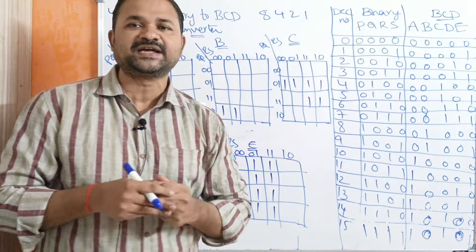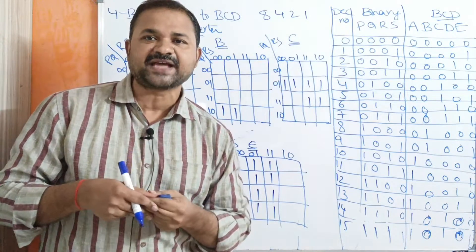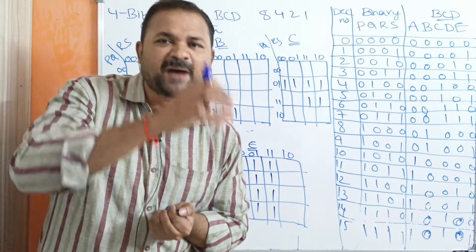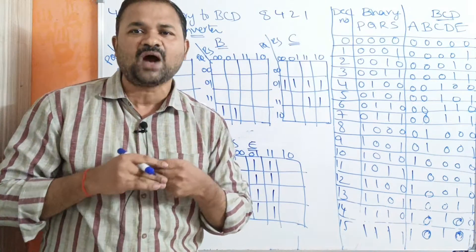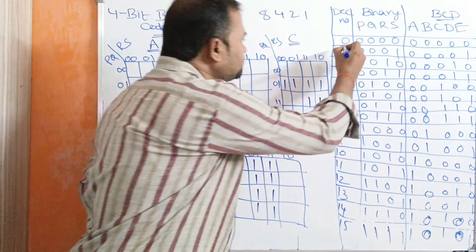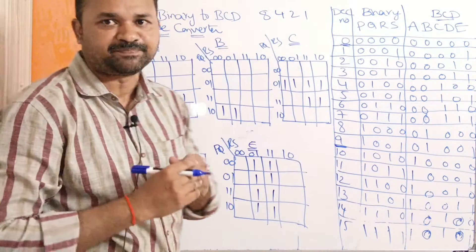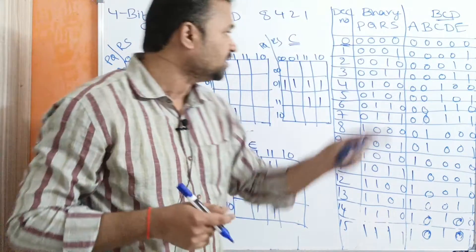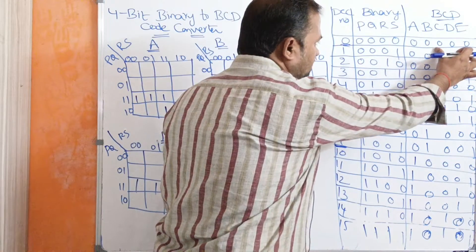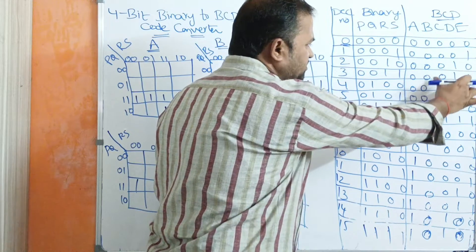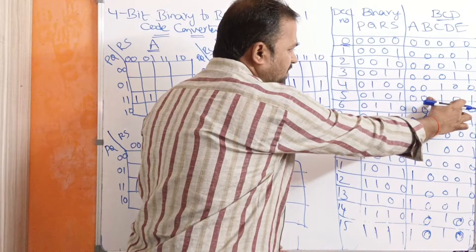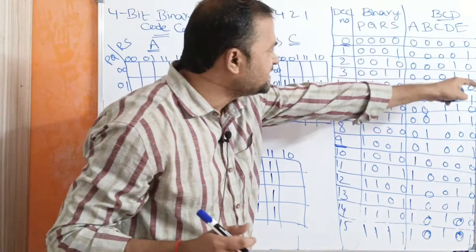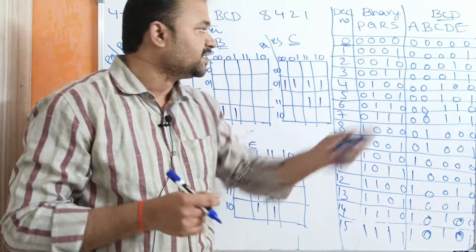Now let us see about the output code, that is BCD. BCD stands for Binary Coded Decimal — we represent a decimal number in binary format. We know that we have 10 BCD numbers from 0 to 9. For these combinations, the BCD number is similar to the binary number: 0 means all 0s, 1 means 0001, 2 means 0010, 3 means 0011, 4 means 0100, 5 means 0101, and 9 means 1001. So from 0 to 9, BCD notation is similar to binary notation, if you observe the last 4 bits.